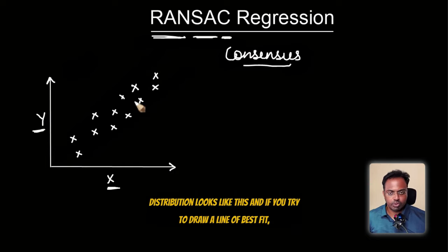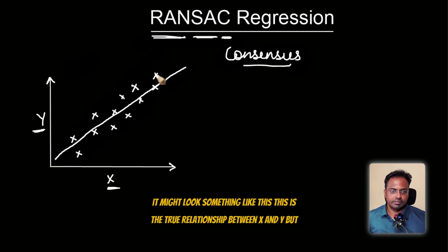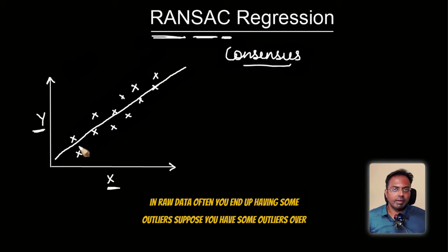So the data points distribution looks like this. And if you try to draw a line of best fit, it might look something like this. This is the true relationship between X and Y. But in raw data, often you end up having some outliers. Suppose you have some outliers over here.